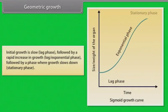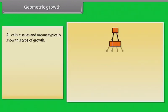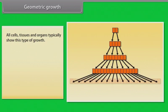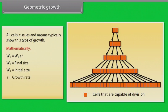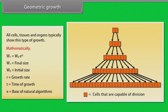Geometric growth: Initial growth is slow, followed by a rapid increase in growth, followed by a phase where growth slows down. All cells, tissues and organs typically show this type of growth. Mathematically, W1 = W0 × e^Rt, where W1 is final size, W0 is initial size, R is growth rate, T is time of growth, and e is the base of natural logarithms.